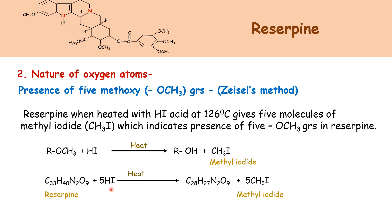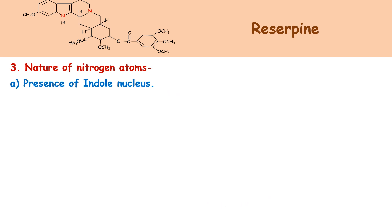This is the reaction for reserpine. Reserpine requires five molecules of hydroiodic acid and it gives five molecules of methyl iodide. Then next is the nature of nitrogen atoms.